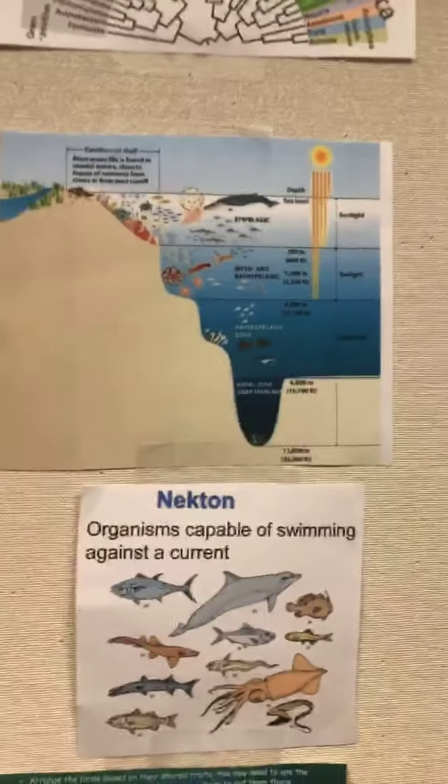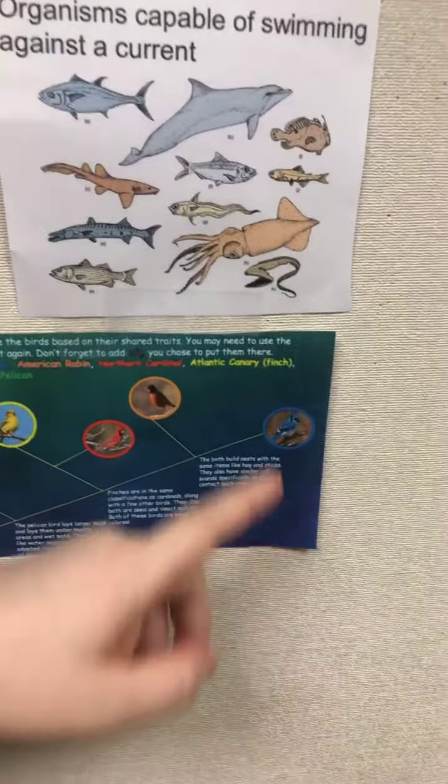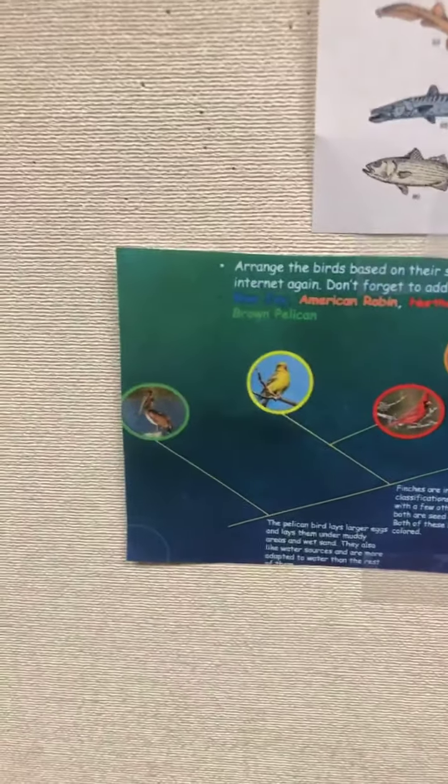Before they had DNA evidence, the main thing that scientists used to create taxonomies was the characteristics of animals. They had to piece it together like a puzzle to tell what characteristics might mean that animals were grouped together. Here's one that some people did using five different types of birds: a pelican, a goldfinch, a cardinal, a robin, and a blue jay.